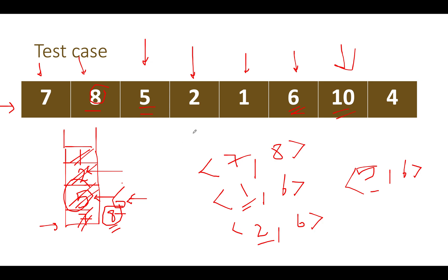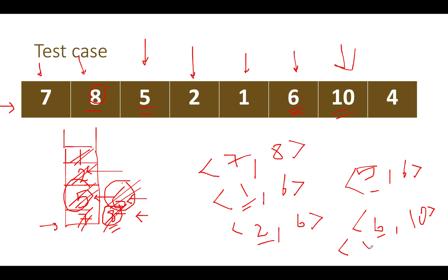Next we see ten. Ten is higher than six, the topmost element, so a new entry is added to the map: for six, the next higher element is ten, and six is removed. The next element in the stack is eight, which is lower than ten, so eight gets removed and we add eight→ten to the map. Ten is then added to the stack.